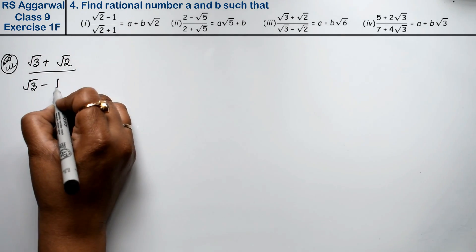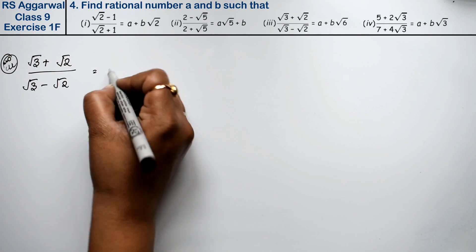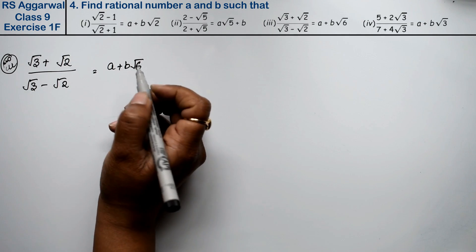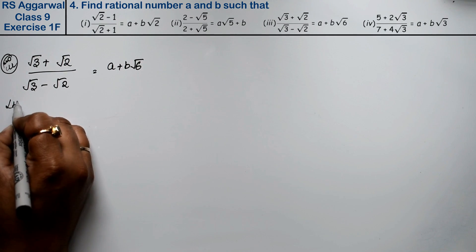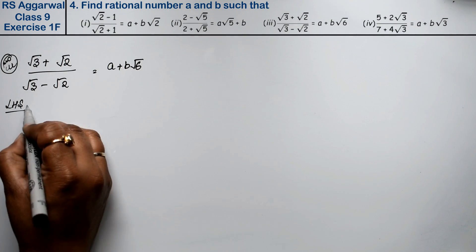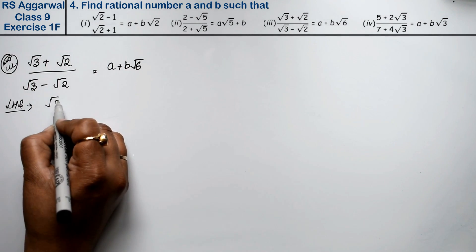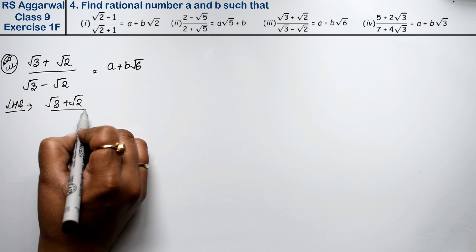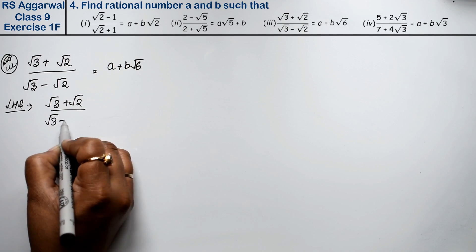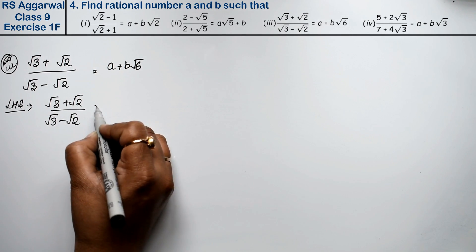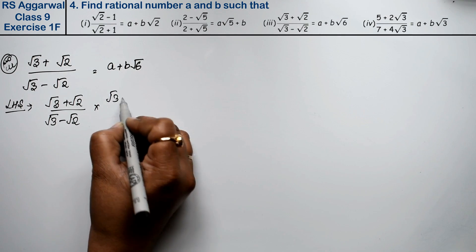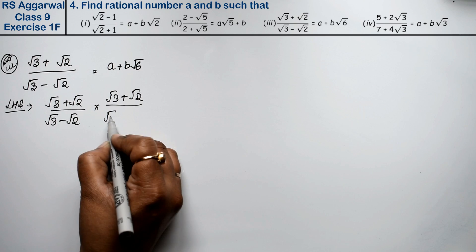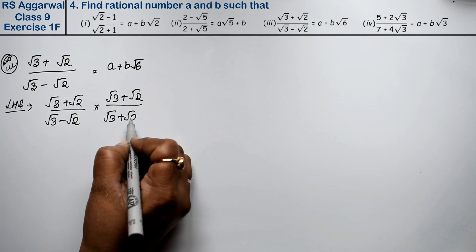Third part is: root 3 plus root 2 upon root 3 minus root 2 equals A plus B root 6. We take the left-hand side. We know from the previous part that the left-hand side is root 3 plus root 2 upon root 3 minus root 2. We rationalize by multiplying by root 3 plus root 2 upon root 3 plus root 2.